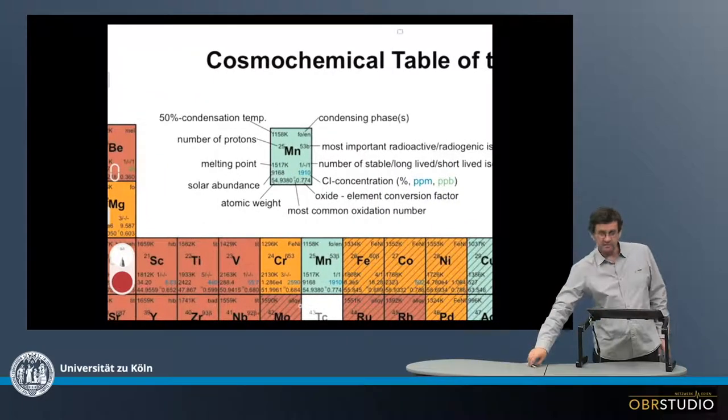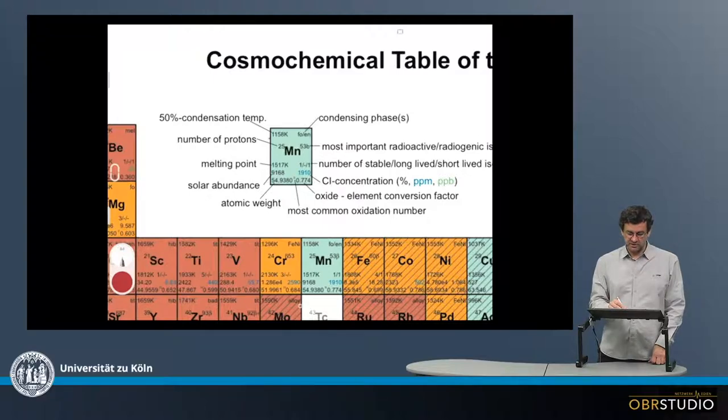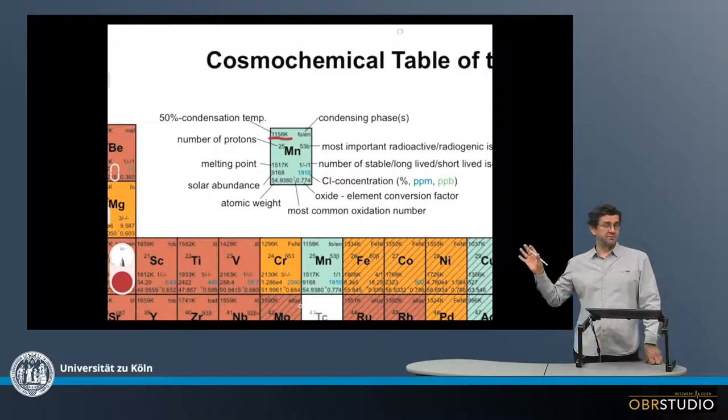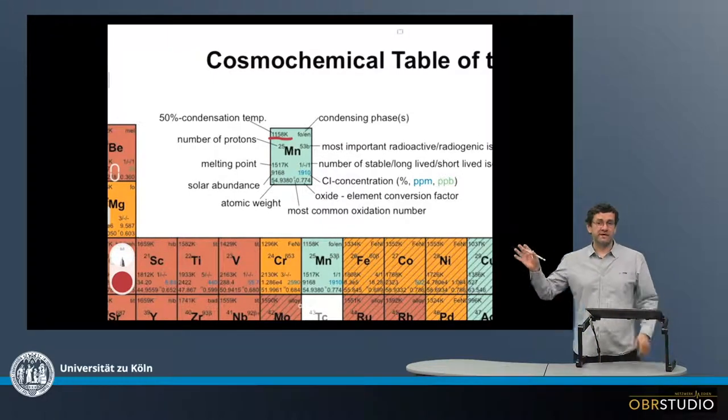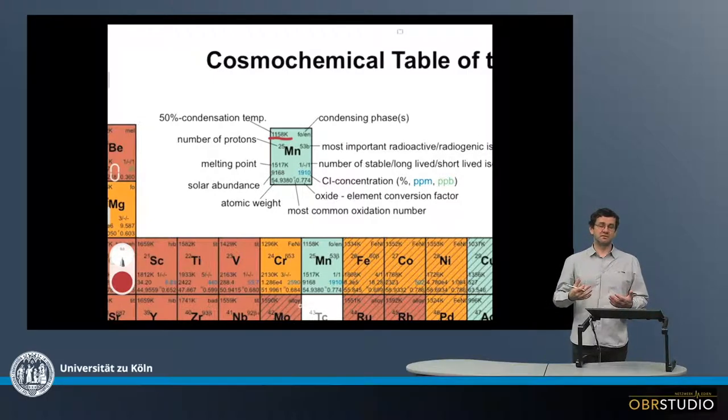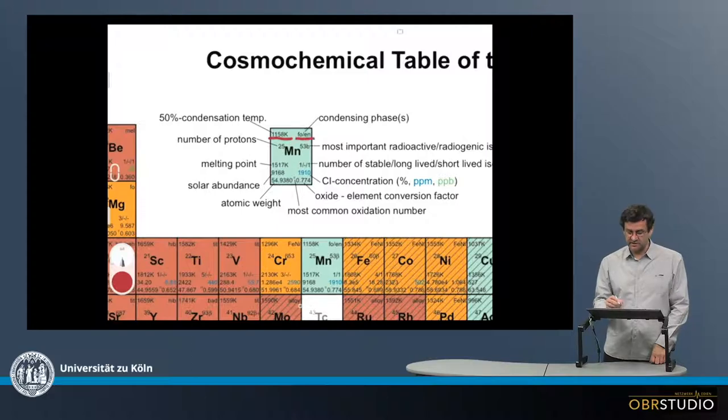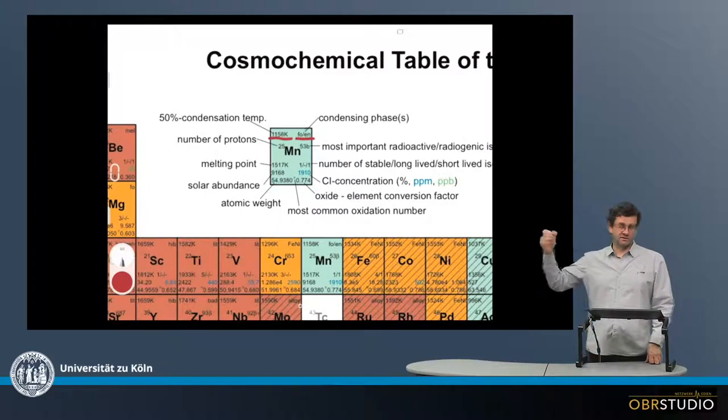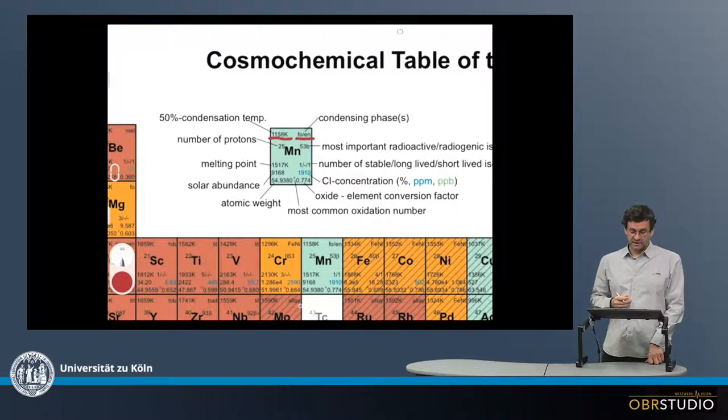Now for each element there are a couple of information, like for example the 50% condensation temperature here. But of course the elements do not condense as elements, but usually inside other phases or minerals. And this is the condensing phase here, so manganese for example goes into phosphide or enstatite.